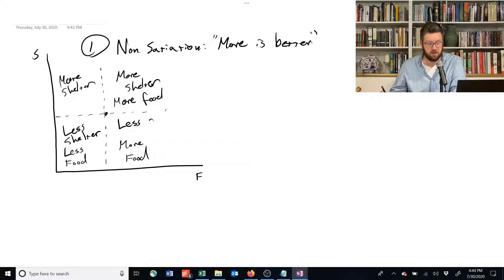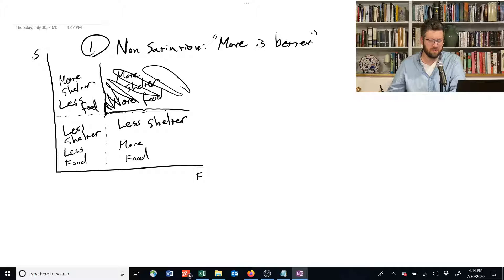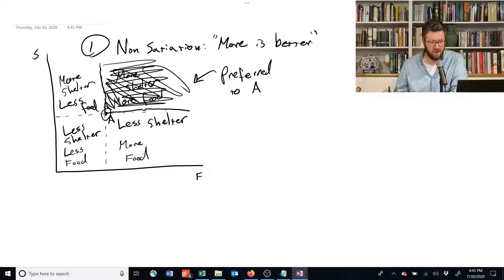So non-satiation basically tells us that anything in this quadrant over here, where we have more food and more shelter, is preferred to this bundle. I'm going to call this bundle A now, so that we have a name for it. So anything over here is preferred to A, because anything in this box here has more food and more shelter.